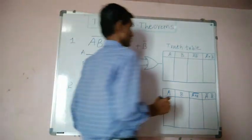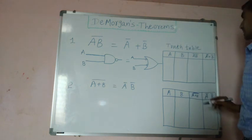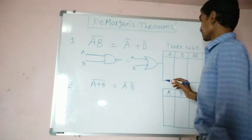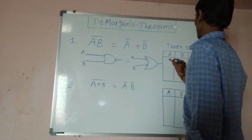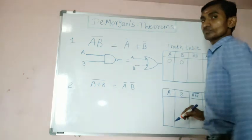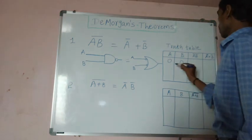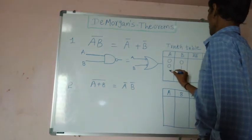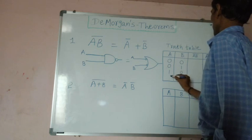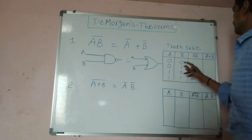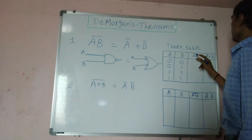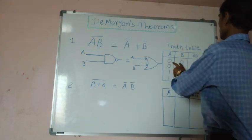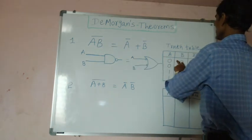So, the corresponding truth table for De Morgan's first theorem. We have two inputs A and B. What are the possible inputs? 0, 0. 0, 1. 1, 0. 1, 1.